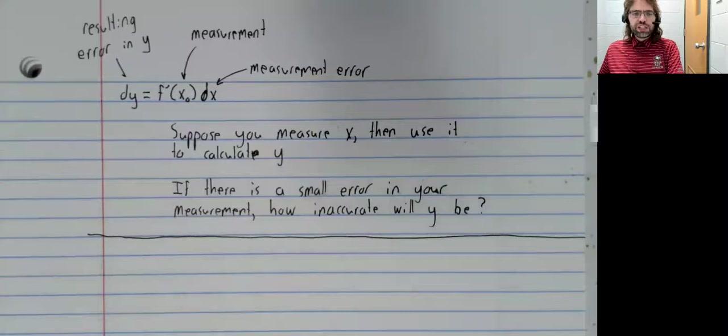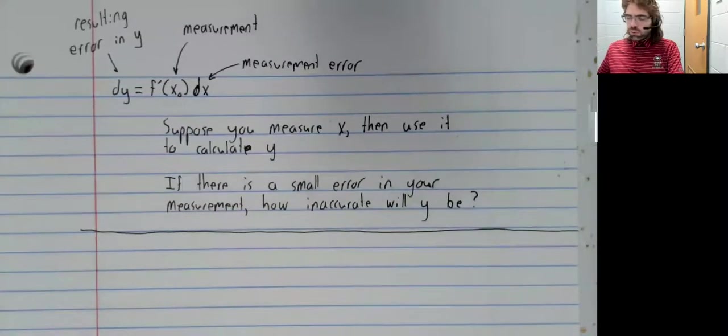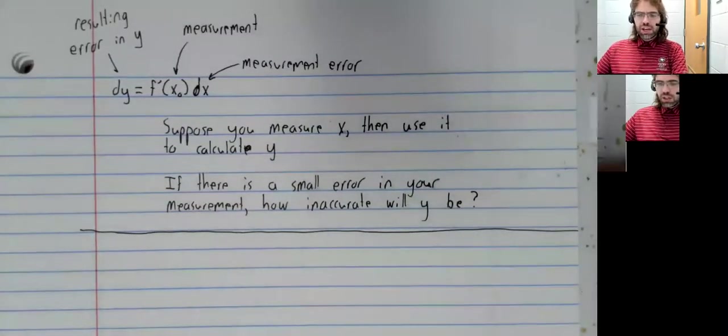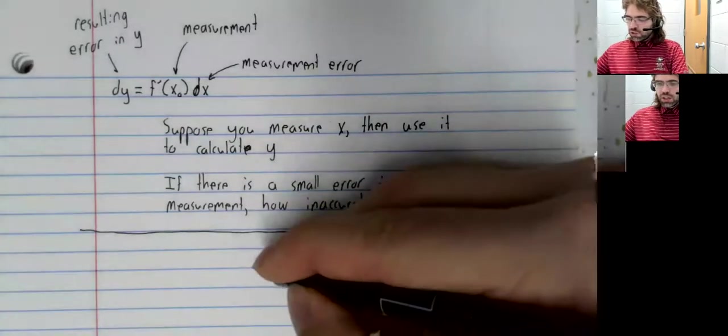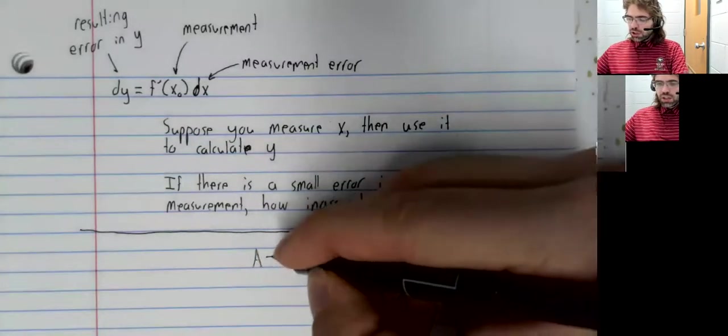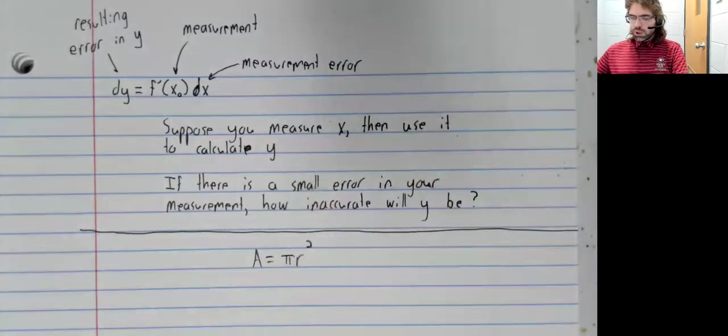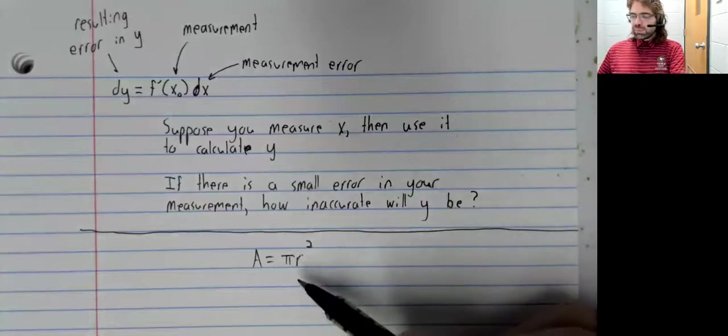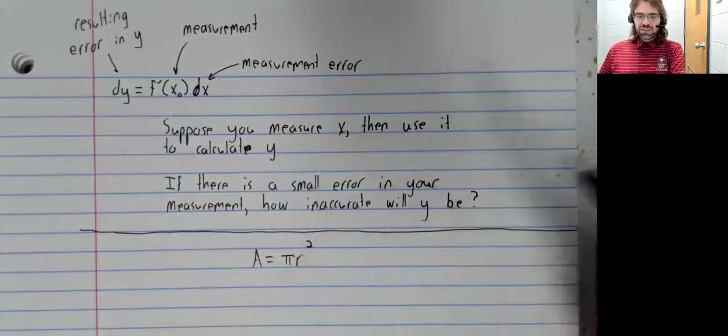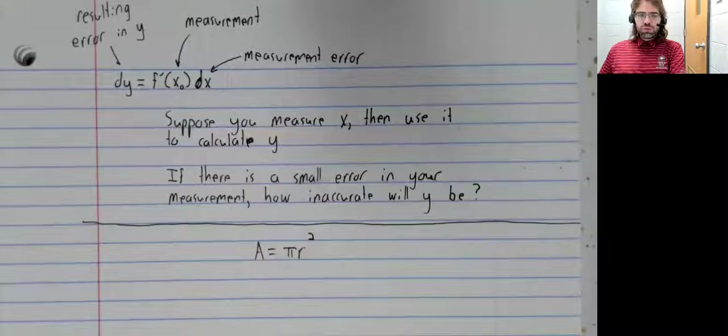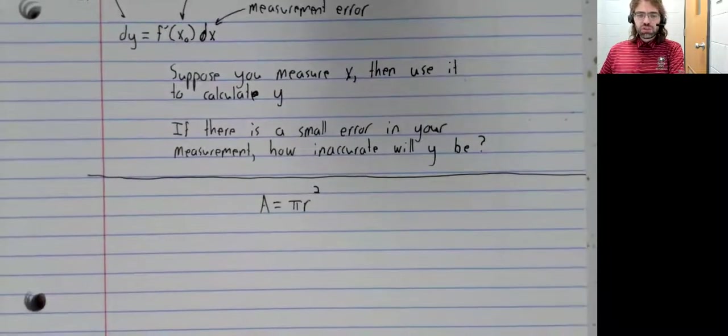To give a concrete example, suppose you want to know the area of a circle. Distances are a lot easier to measure than areas. So if you want to know the area of a circle, what you should almost certainly do is measure the radius of the circle, and then use that to compute the area.